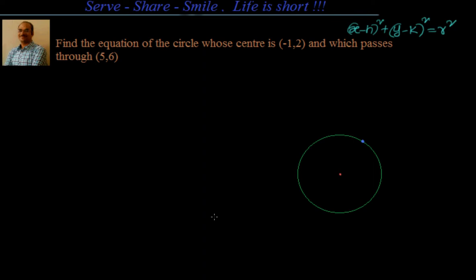Hello friends, welcome back. Let's look at this example related to finding the equation of the circle. We have been given that the center of the circle is at minus 1 comma 2 and the circle also passes through a point 5 comma 6. So this is 5 comma 6 and the center is at minus 1 comma 2. We have to find out the equation of the circle.